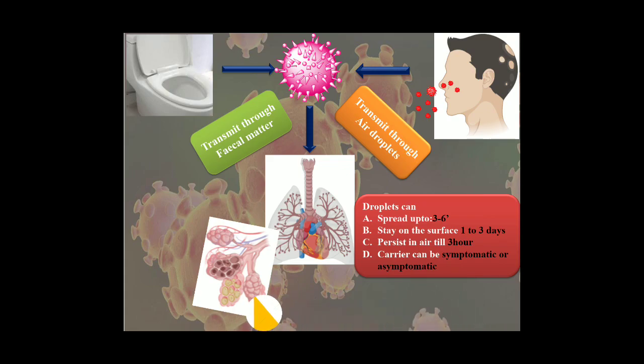Generally, coronavirus transmits through fecal matter and air droplets if any person is infected with COVID-19. These droplets spread up to 3 to 6 feet, stay on surfaces from 1 to 3 days, and persist in air for 3 hours. The person could be symptomatic or asymptomatic.